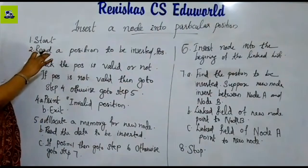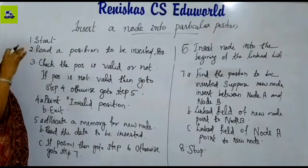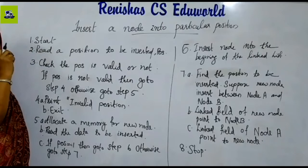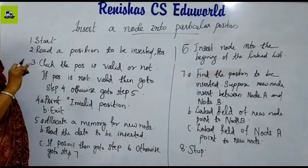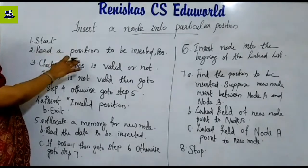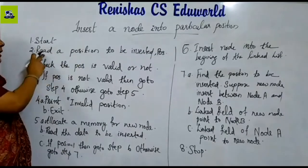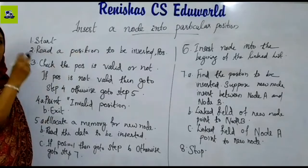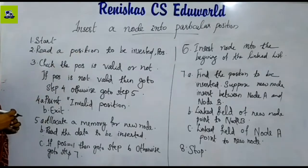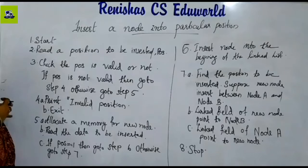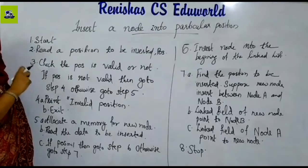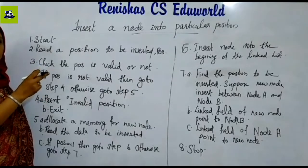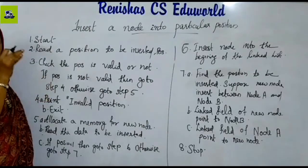Next, insert at a particular position. We start reading the position to be inserted. The position is stored in a variable called 'post'. Now let's check whether the position is valid or not. If it is valid, the particular node can be inserted.